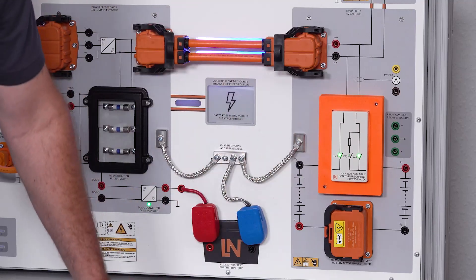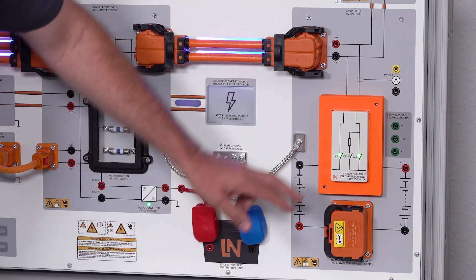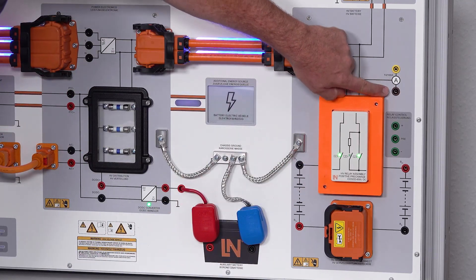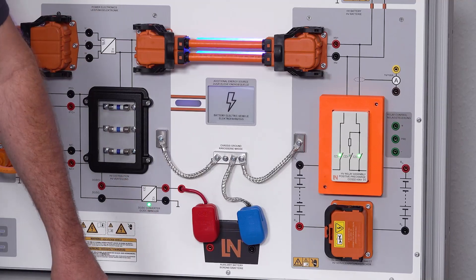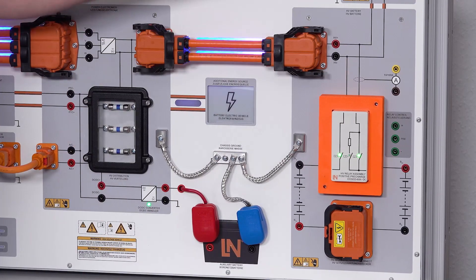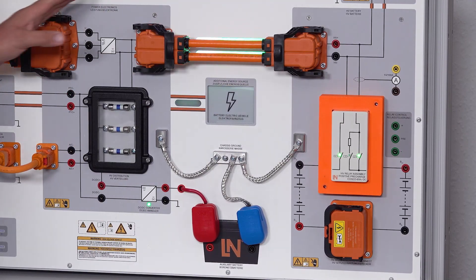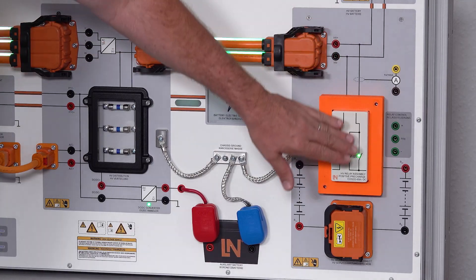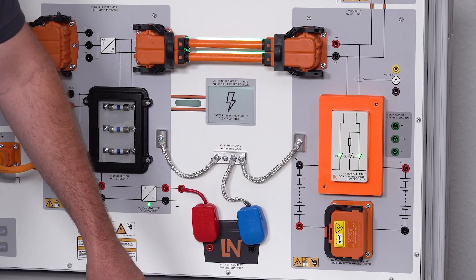We can see the process of those relays switching on and off. We can see here also a current clamp that is measuring the current either going out of or into the battery. Obviously during regeneration we'll have current going back into the battery.